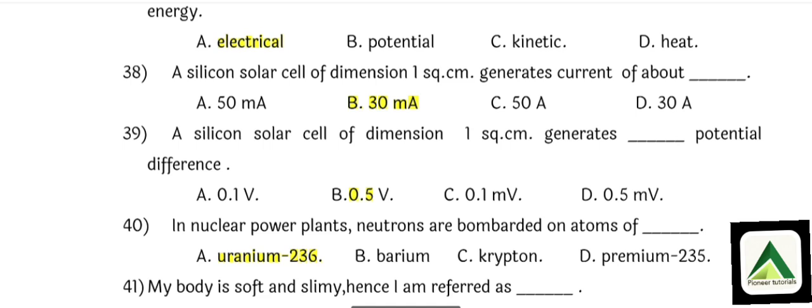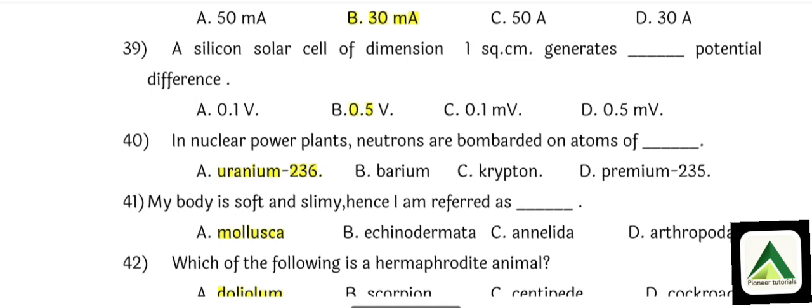Question number 39: A silicon solar cell of dimension 1 square centimeter generates a potential difference. Think about questions 38 and 39 — there is only a small change. In question 39, if it is potential difference, then option number B: 0.5 volt. If it is current-related, then it is 30 milliampere. Question number 40: In a nuclear power plant, neutrons are bombarded on atom of option number A: Uranium 235.